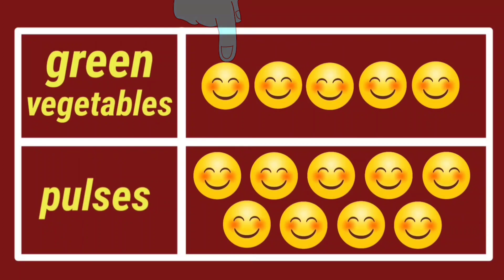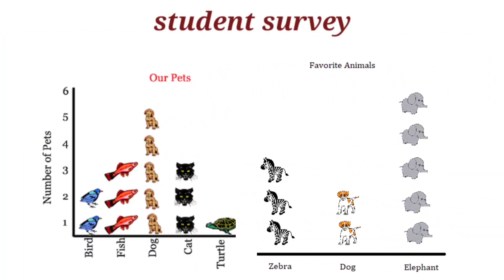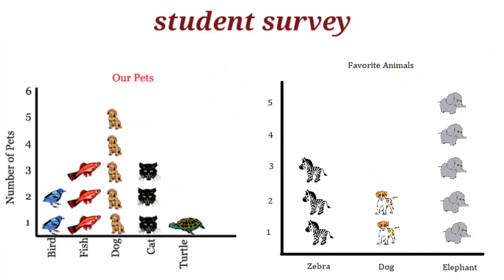Here, one such symbol is equal to one student. Because the information depicted through pictures or symbols is easy to understand, in our daily life, picture graphs are very convenient to represent data.